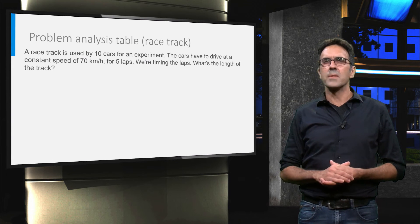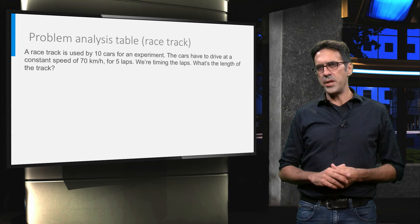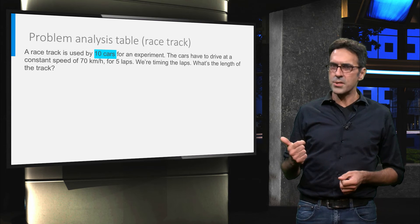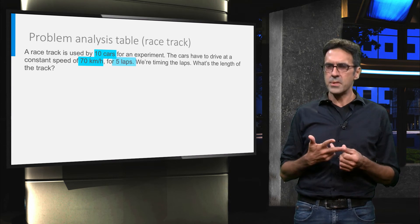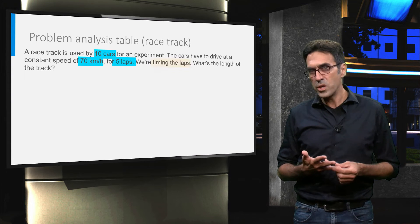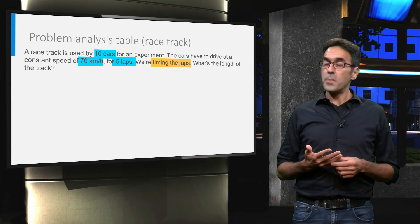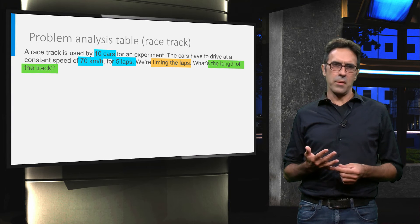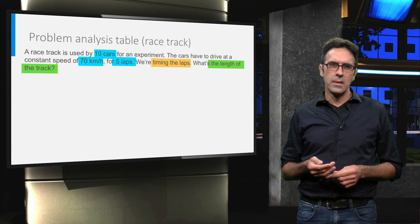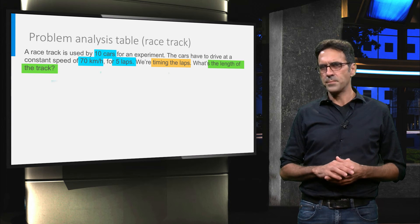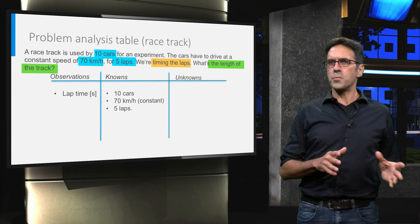Let's see how it goes. In the description, we highlight the relevant information: the amount of cars, the velocity, the amount of laps, the fact that we are recording time, and the purpose of the whole exercise, the length of the track. In the problem analysis table, we can list them in the corresponding columns.